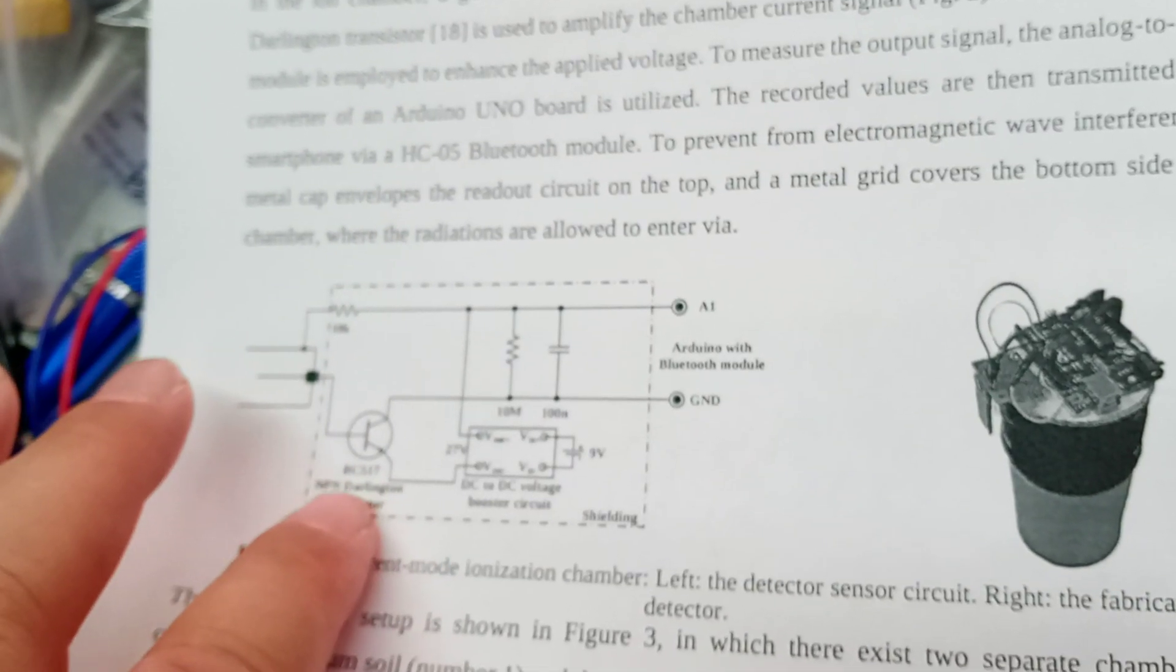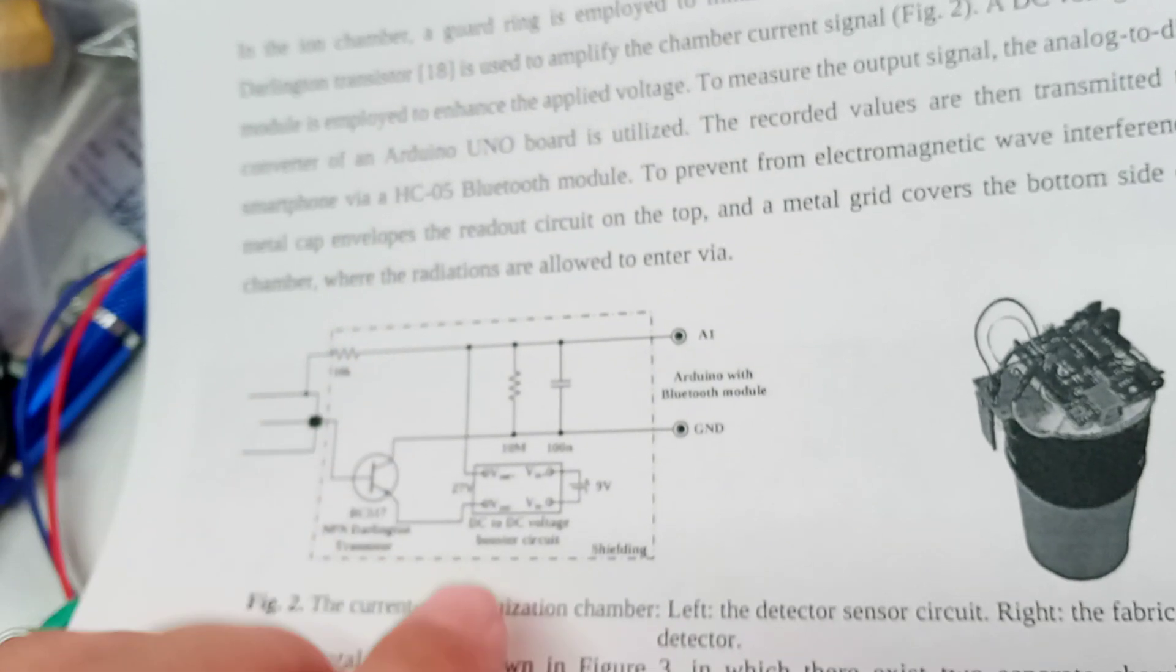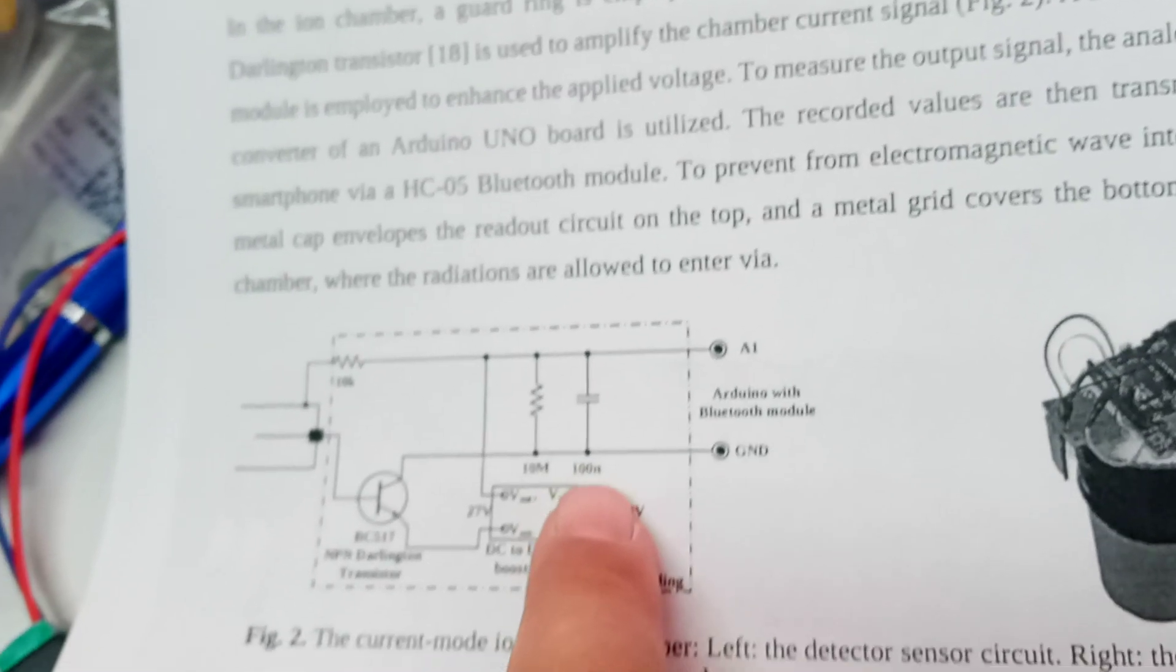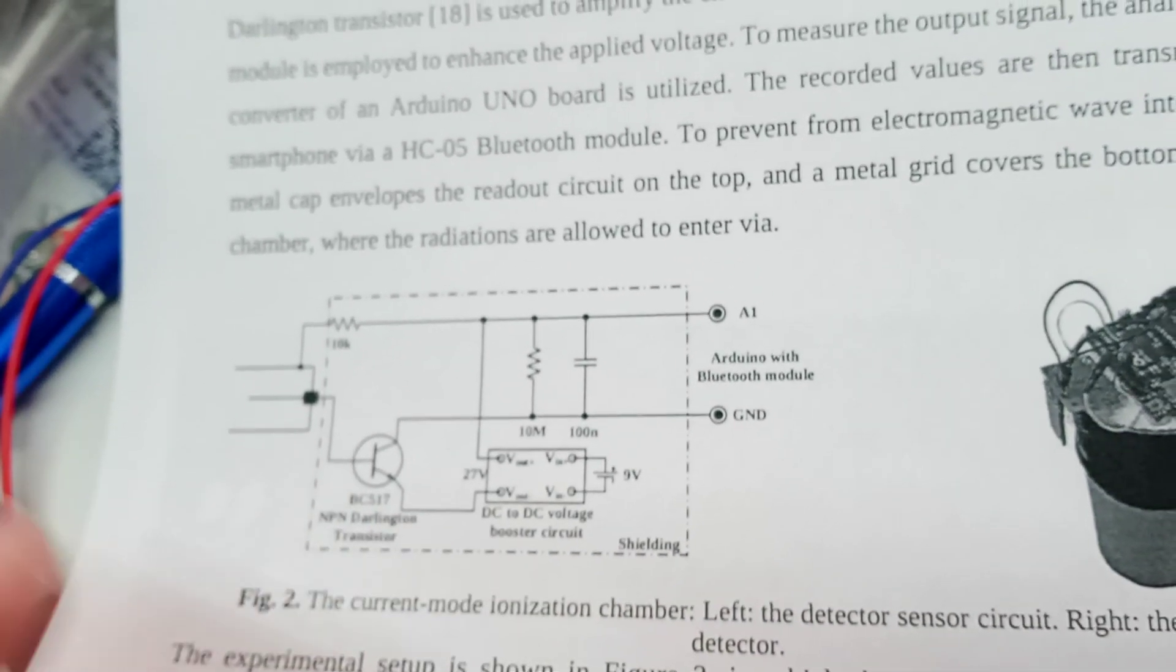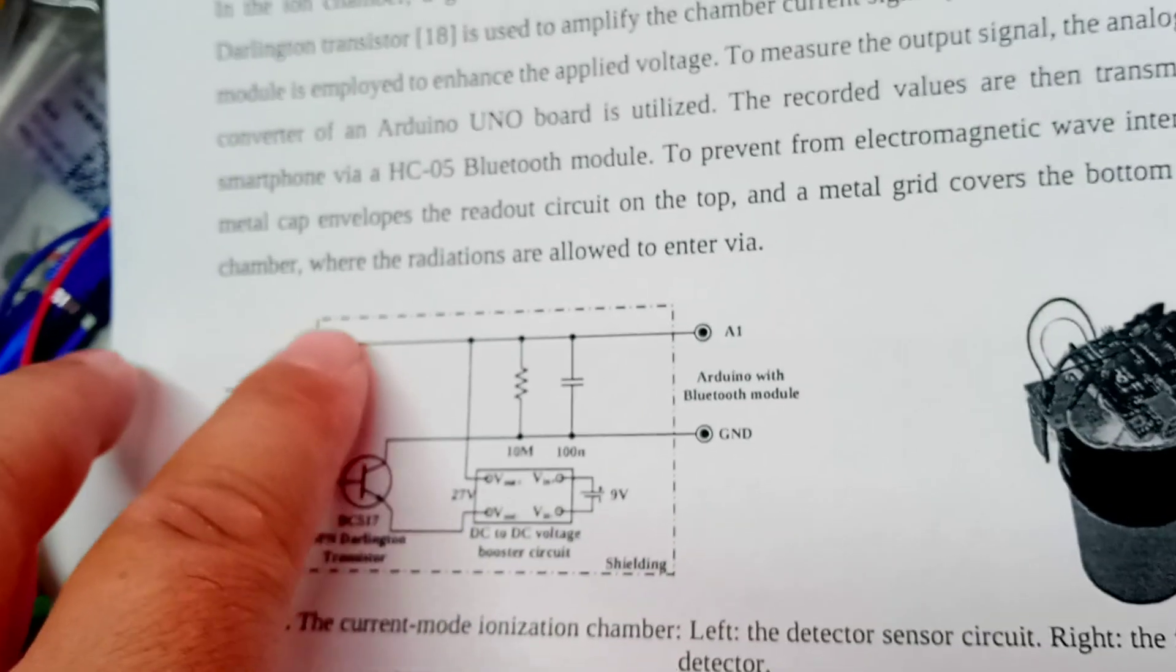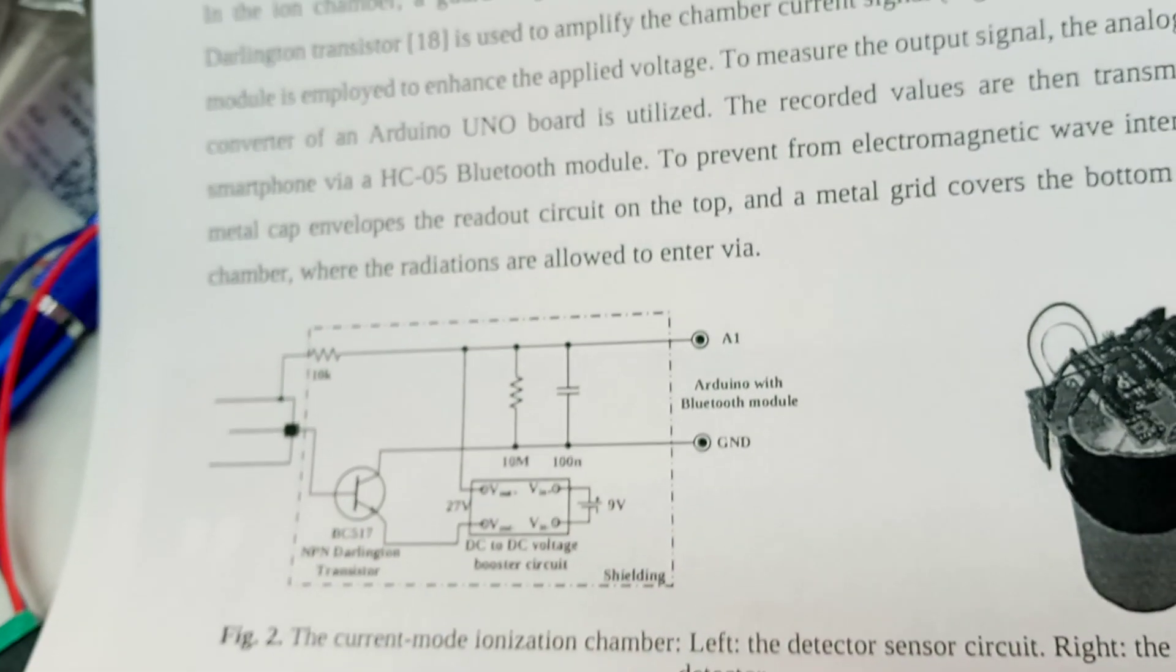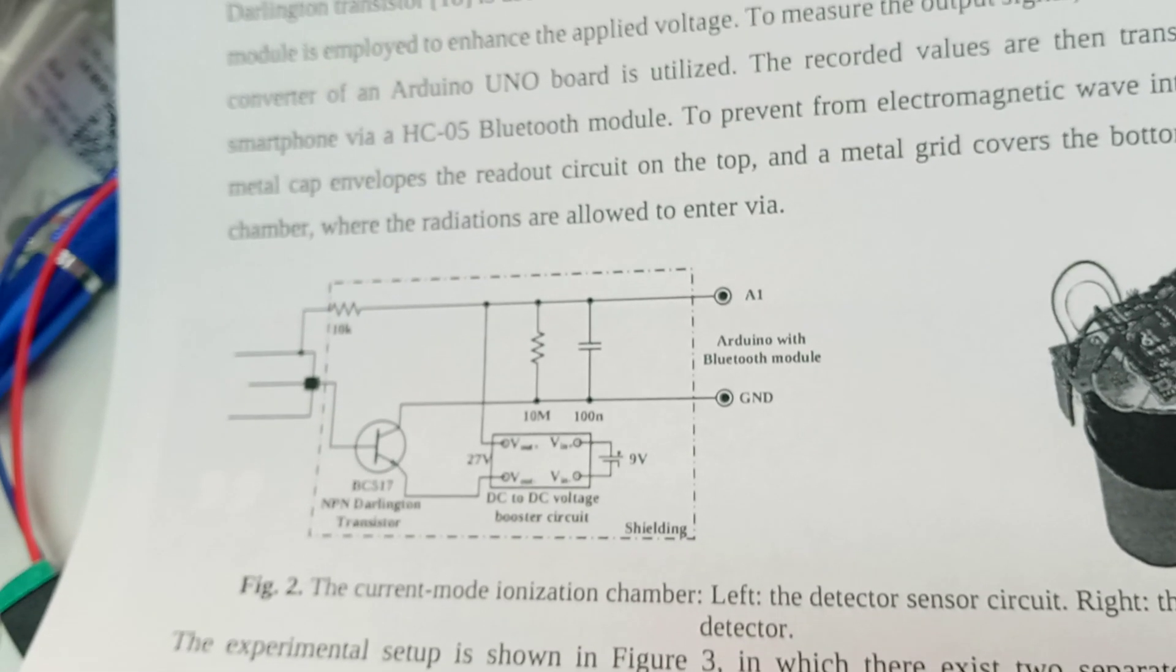So, I've got the BC517. That's no problem. I've got 10K resistor. I've got a 10 megohm resistor, and I've got 100 nanofarad capacitor. I think I've got 100 nanofarad. I'll do my best, anyway. Anyway, this resistor might have to change, and this resistor might have to change, but that's what I'm going to be aiming at now.